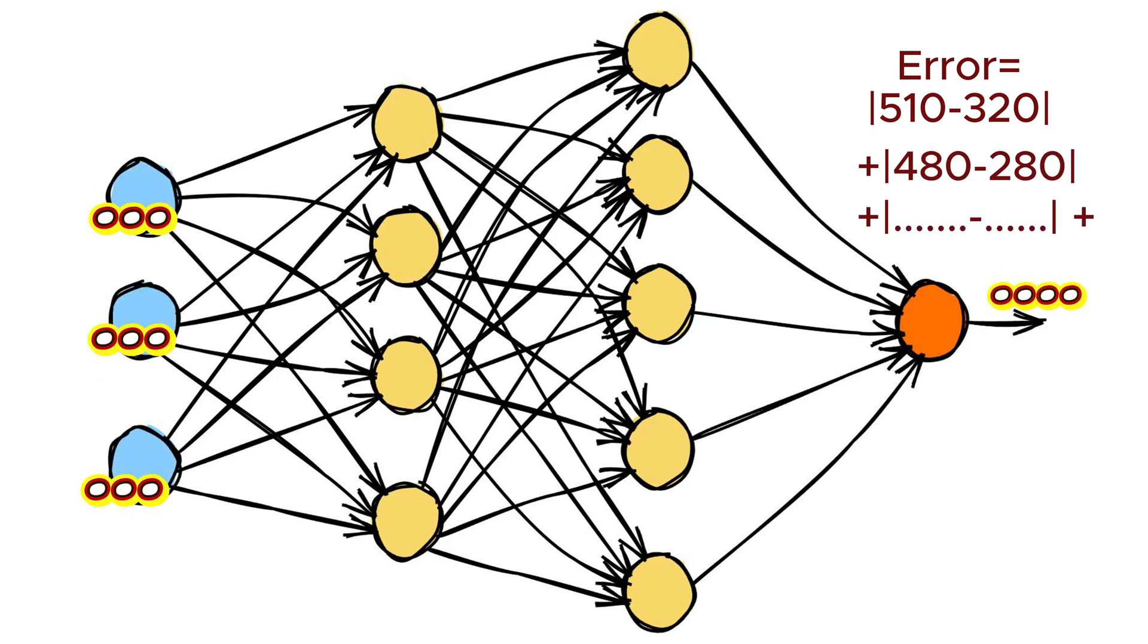Now, notice that in the beginning, we had random W and bias values for the neurons. That has resulted in some errors. So, we should do some correction of those weights and biases.